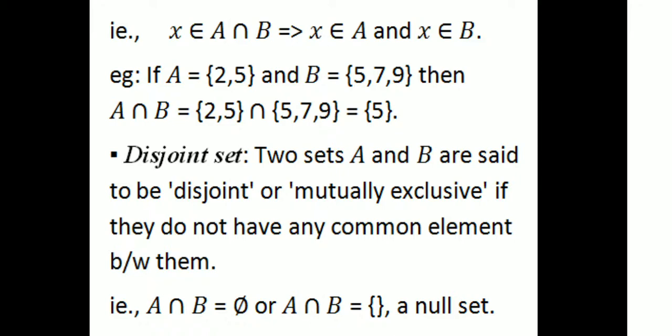Two sets A and B are said to be disjoint or mutually exclusive if they do not have any common element between them. If there are common elements, they are not disjoint or mutually exclusive.